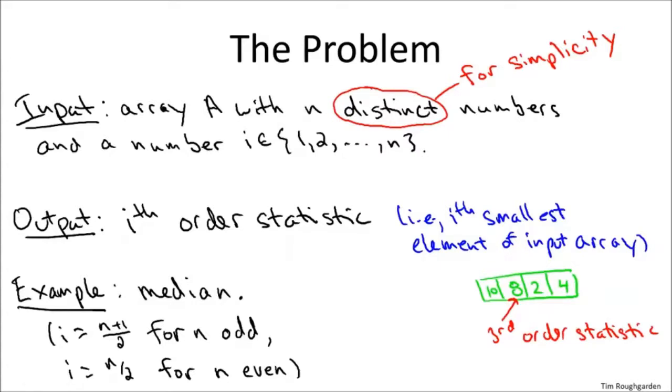So let me remind you the problem. This is the ith order statistic problem. We're given an array, it has n distinct entries. Again, the distinctness is for simplicity. And you're given a number i between one and n. You're responsible for finding the ith smallest number, which we call the ith order statistic. For example, if i is something like n over two, then we're looking for the median.